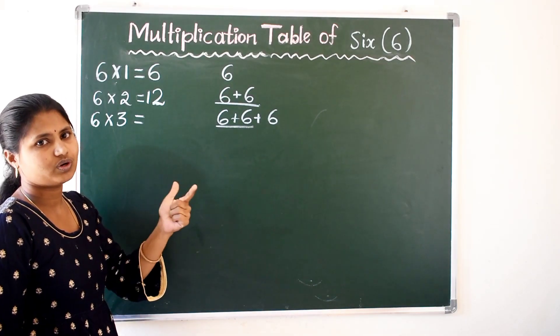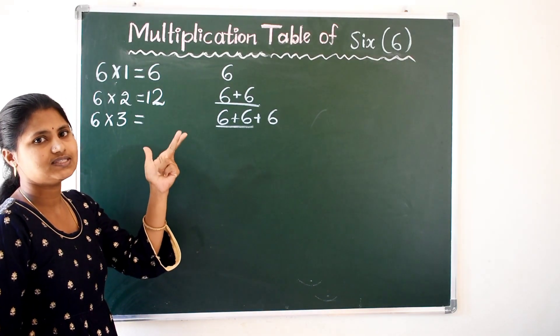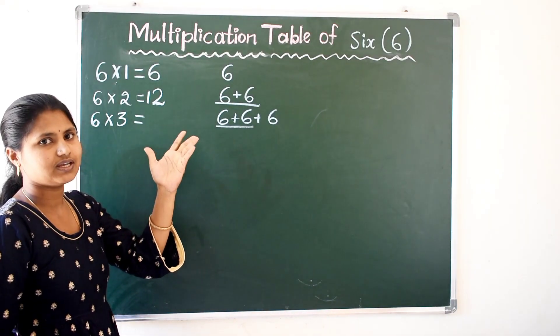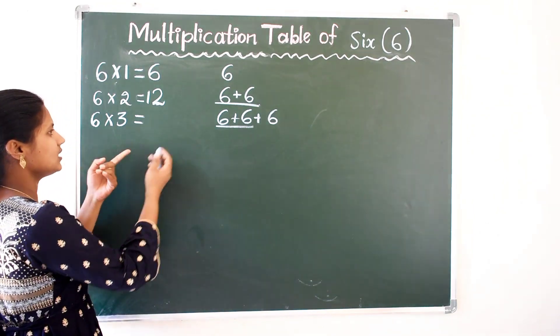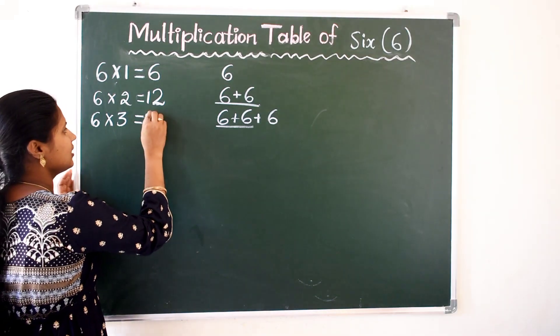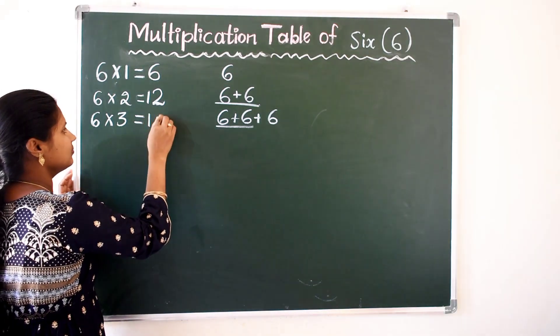13, 14, 15, 16, 17, 18. So 6 3 times are 18.